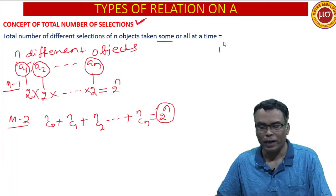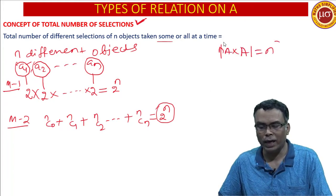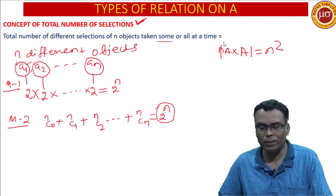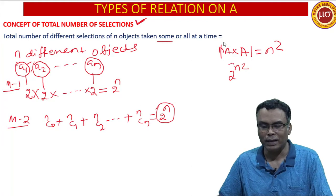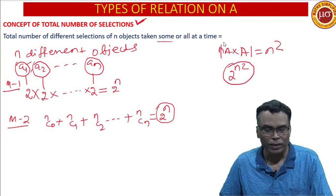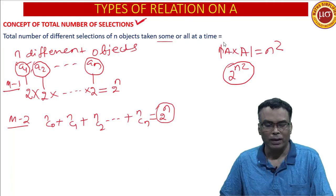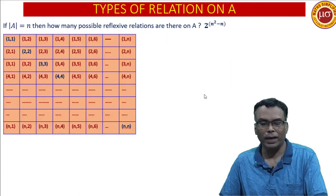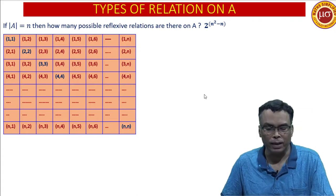If the number of elements in A cross A is N square, then the number of selections — meaning number of subsets — is 2 to the power N square. This is the total number of relations in a set A. Now let us come to how we calculate the number of reflexive relations.